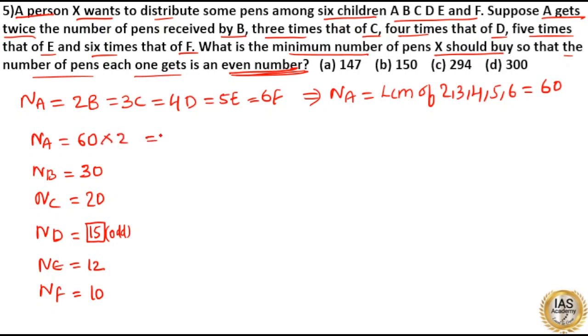60 into 2 equal to 120 and 30 into 2 is equal to 60 and 20 into 2 is equal to 40. Now 15 into 2, 30 which is an even number.